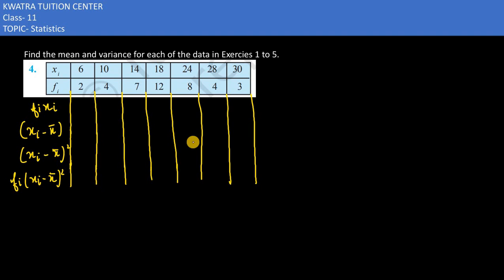First here would be to find the mean and the variance. So first let's take the mean. If we take the mean, first let's multiply the numbers xi and fi. 12, next would be 40, 14 into 7.